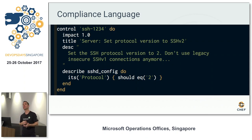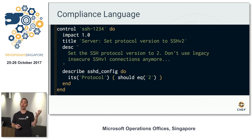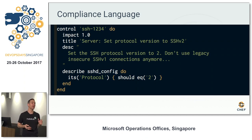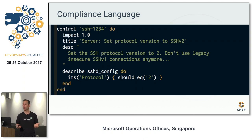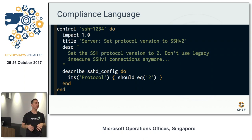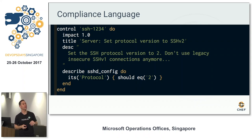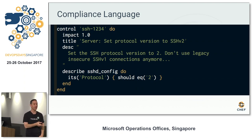Your auditors could probably understand this — they're not sysadmins, they don't know Perl and grep and sed, but if you tell them 'protocol should equal two' they can read that. A junior sysadmin on day one understands that. It also has things your auditors are looking for: the impact — is this critical? If you're running SSH v1 you might as well be running Telnet. There's also a title, description, and tagging so you can generate reports. Your auditors get a nice big report showing SSH protocol controls pass.